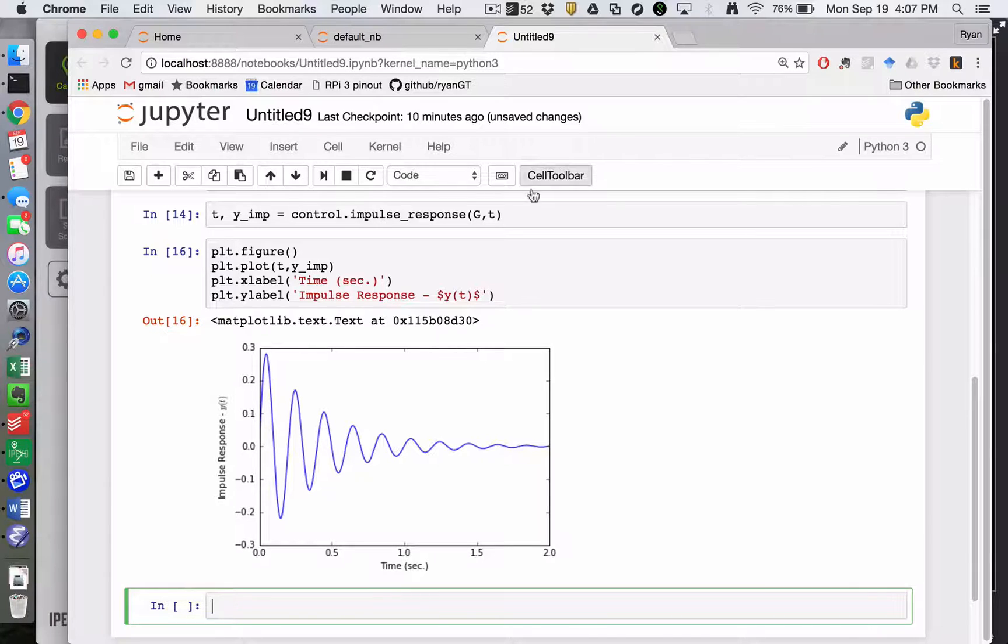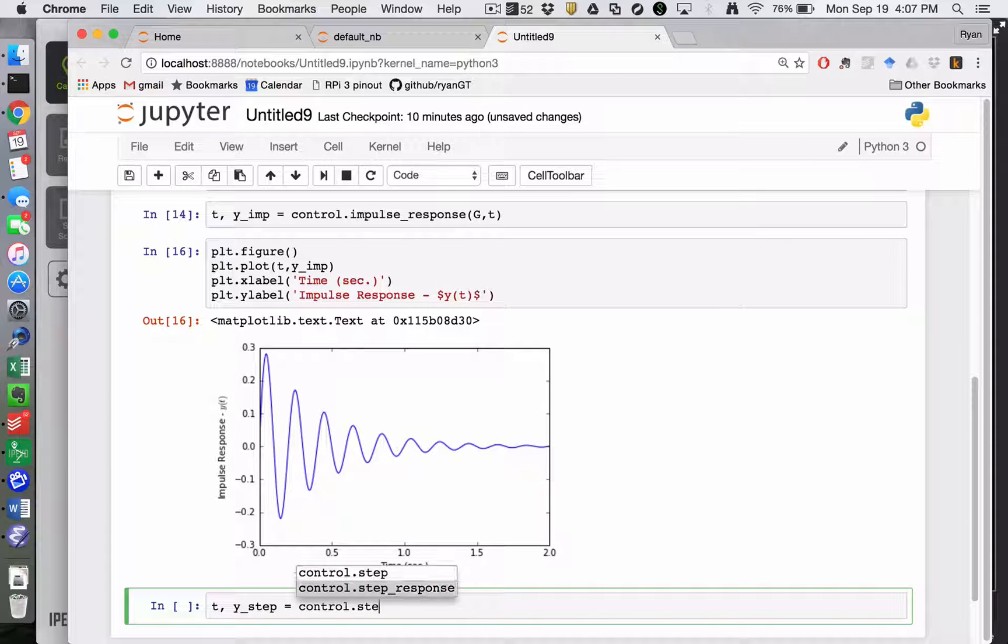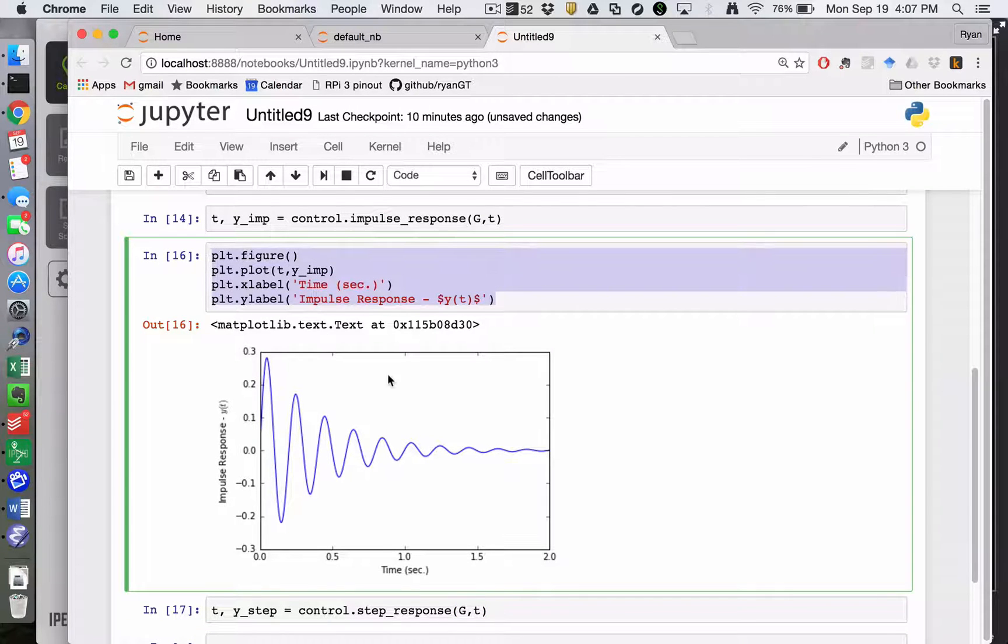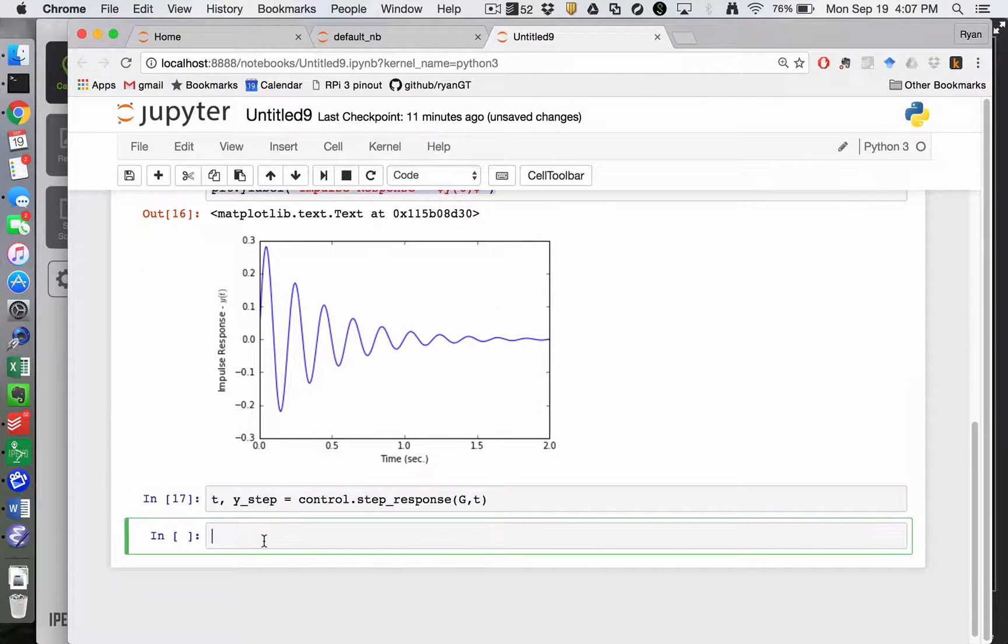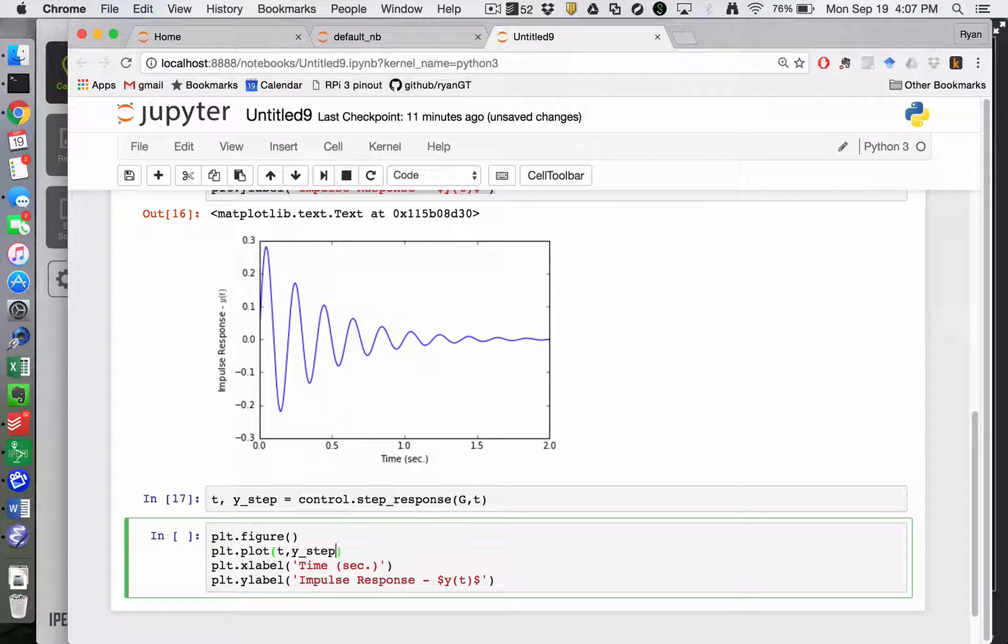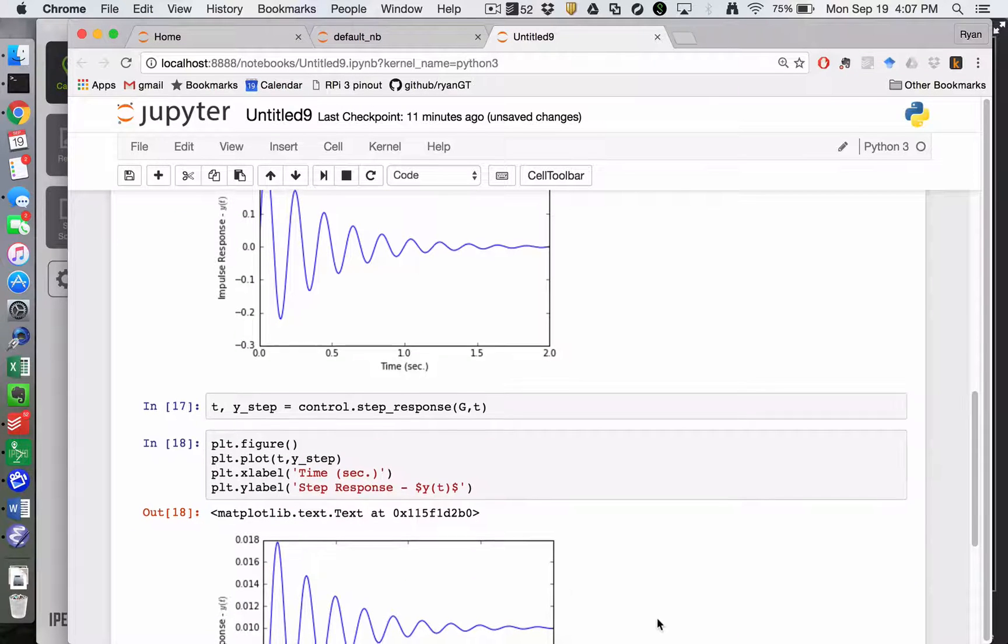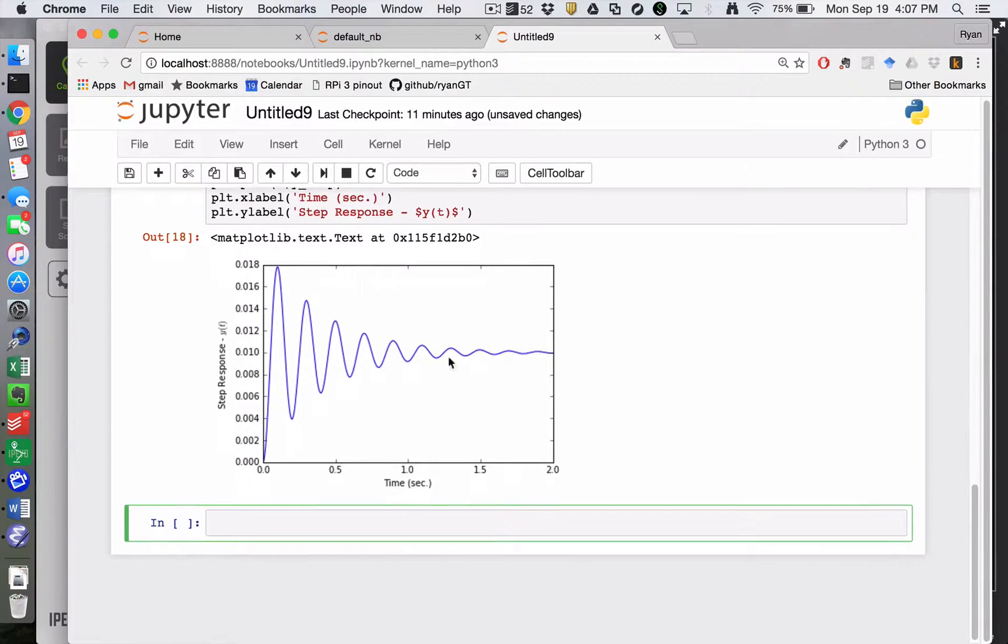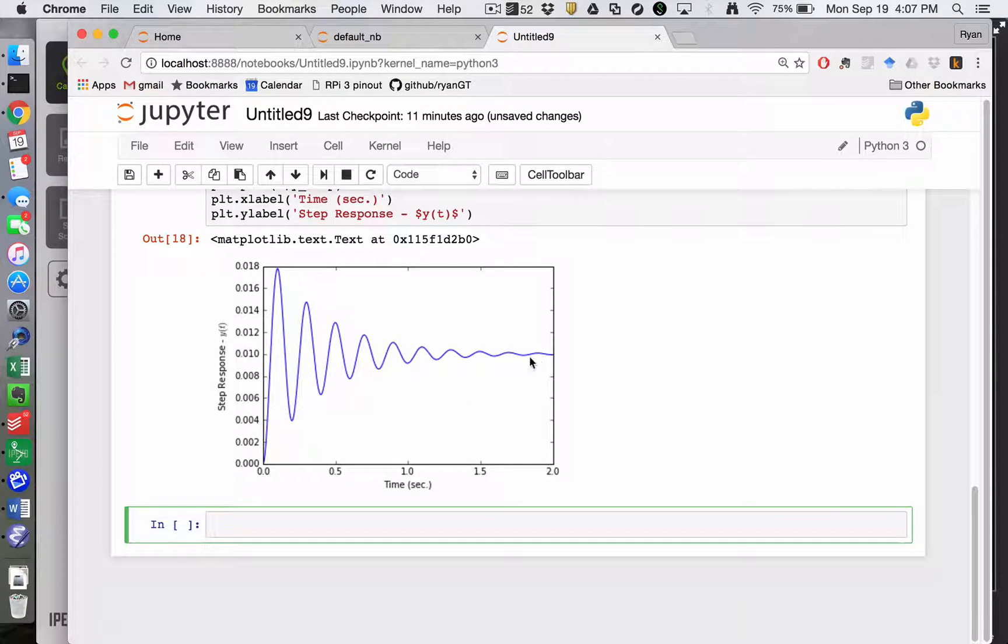So without having to create a new transfer function, I could also say t comma y step is equal to the control dot step response. And again, g comma t in. And then I'm going to copy and reuse some of these things and make some minor changes. And so this will be the step response. And the key difference there is that the impulse response comes back to 0, and the step response ends up at 1 over k.